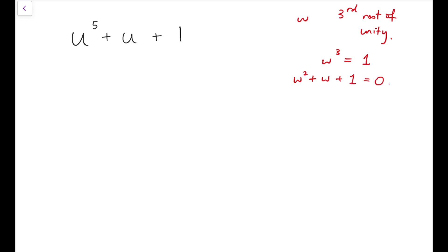If I put omega into a polynomial and I get 0 in return, then that means the polynomial, say in this case, u square plus u plus 1 will be a factor of this polynomial. So let's see. When I put omega into this, omega to the power of 5 plus omega plus 1 is equal to omega cubed times omega square plus omega plus 1, which is exactly omega square plus omega plus 1, so that means we'll have a 0.